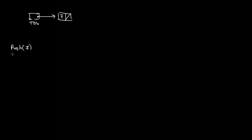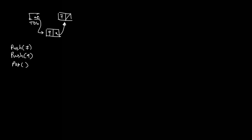If we then call push 9, a new node storing 9 must be added at the beginning of the current linked list. The first operation is to make the new node's link part point to the existing node, and then make top-of-stack point to this new node. This is how we add a node at the beginning of the list.